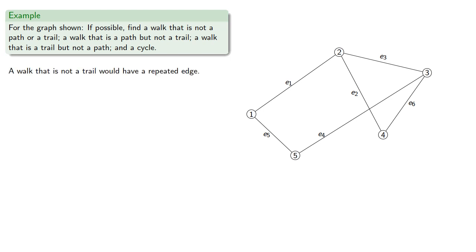A walk that is not a trail would have a repeated edge. And if it's not a path, it would also have a repeated vertex. So we just have to make sure we reuse an edge and a vertex. For example, 1 to 2 to 4 back to 2 would reuse the edge and repeat a vertex.